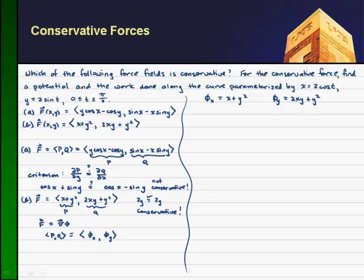So if the partial of phi with respect to x is x plus y squared, then my function phi of x, y, according to the phi x, taking a partial integral of the right-hand side, gives me one-half x squared plus xy squared plus some arbitrary function in y.